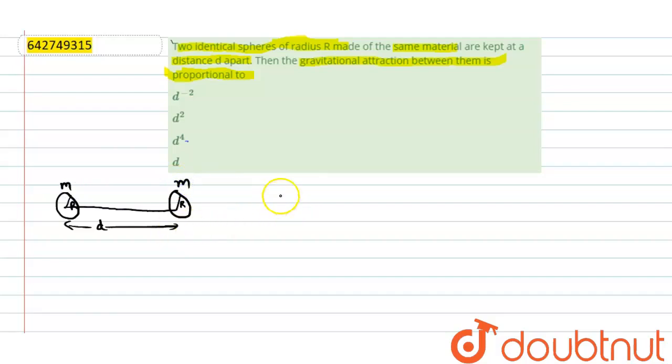The gravitational attraction between them equals G M M divided by R square. R is d.